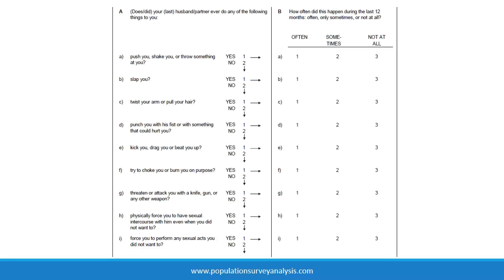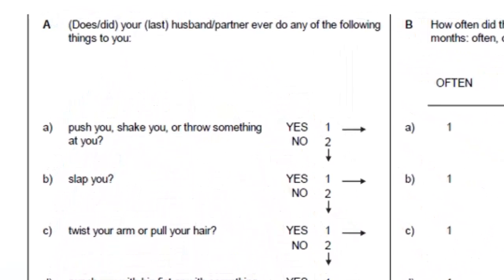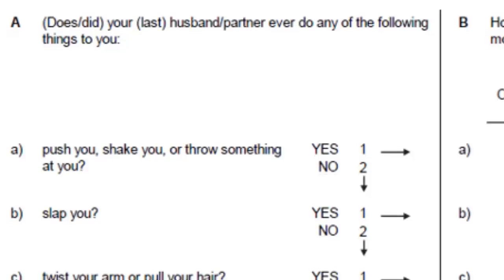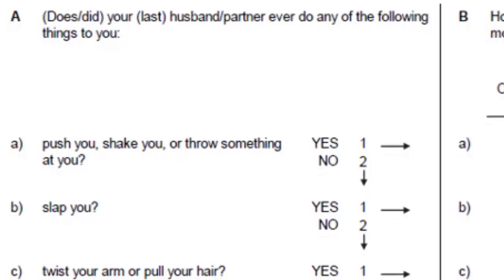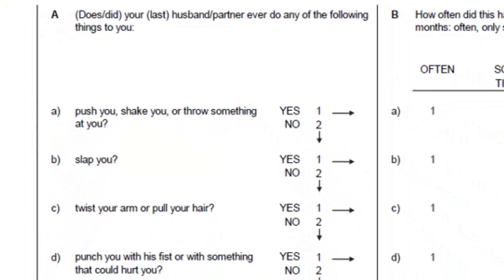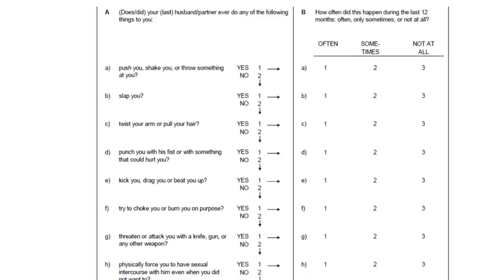DHS interviewers follow a specific protocol that guides them through hundreds of questions in a specific order and skip pattern. Although many questions are about sensitive topics and respondents may share deeply personal details from their lives, all data are coded according to predetermined response categories. For example, a question in the domestic violence module on the Women's Questionnaire asks: does your husband ever do any of the following things to you — push you, shake you, or throw something at you, slap you, twist your arm or pull your hair, and so on. Although a respondent may describe an incident of domestic violence in her personal life, her response is recorded in a quantitative format with the value 1 equals yes and 2 equals no to each question.